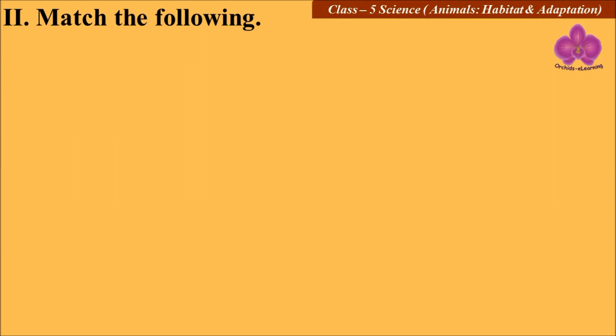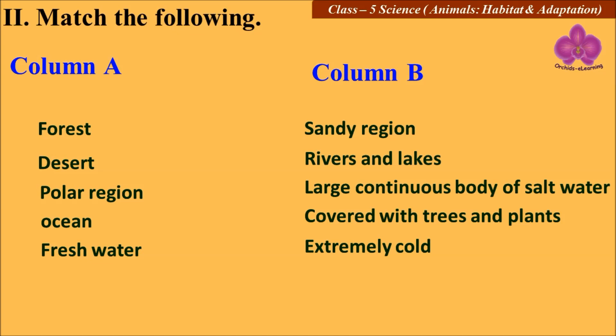Match the following. Look at the options in column A and column B. Forest: covered with trees and plants. Desert: sandy region. Polar region: extremely cold. Ocean: large continuous body of salt water. Freshwater: rivers and lakes.